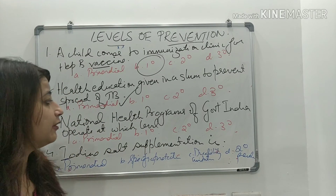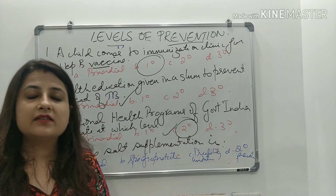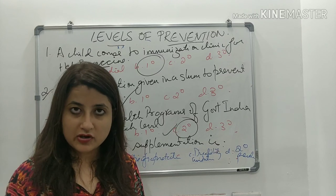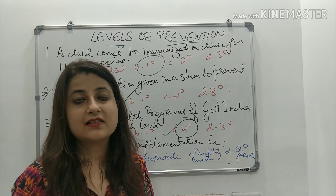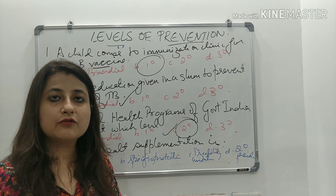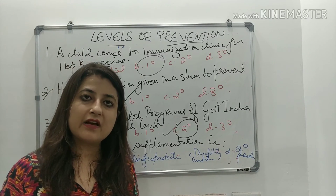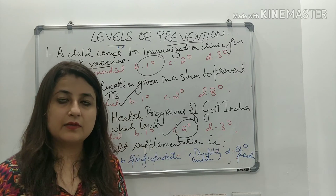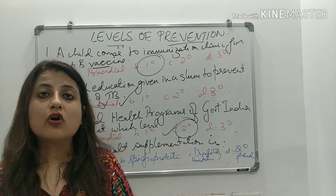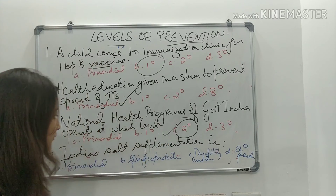National health programs of Government of India operate at which level? The correct answer is secondary level. In all national programs — like those for TB or vector-borne diseases — we are making early diagnoses. For example, active surveillance going house to house looking for fever cases, using RDT kits to detect malaria (plasmodium vivax or falciparum), taking blood to prepare a slide to identify malaria parasites. DOTS is also treatment for TB. So most national programs fall at secondary level of prevention.